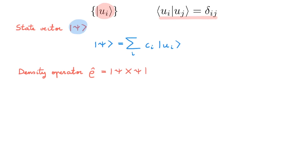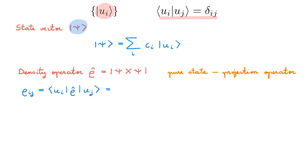I want to emphasize that this definition is only valid for pure states. If you have seen the video on projection operators, you will immediately recognize this operator ρ as the projector onto the state ψ, and indeed for pure states these two operators are the same. Just like we wrote the state ψ in the U basis, we now want to write the density operator ρ in the U basis. Remember that to write an operator in a particular basis we have to calculate its matrix elements ρ_ij, equal to ⟨u_i|ρ|u_j⟩. Plugging in the definition of ρ we get ⟨u_i|ψ⟩⟨ψ|u_j⟩, which gives c_i times c_j*, so that we get ρ_ij = c_i c_j*.